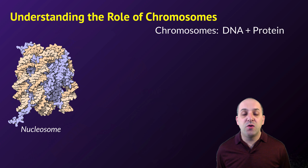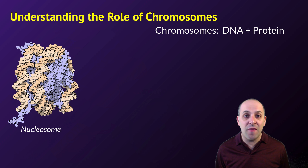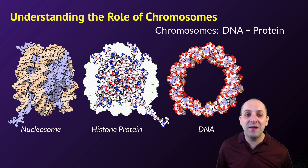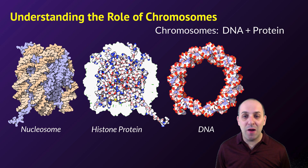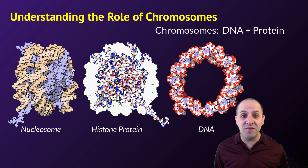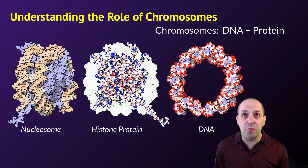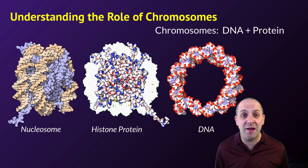DNA doesn't exist by itself in the cell. It actually exists connected to a variety of different proteins, an example of which is shown in this graphic. We see a nucleosome, which is one of the major structural units of DNA in a cell. That nucleosome is itself made out of protein — in this case, histone proteins — and the DNA is wrapped around the histones. They were able to determine that chromosomes were complexes of DNA and protein, which set the direction for inheritance research in terms of looking at the role of protein and DNA in inheritance.